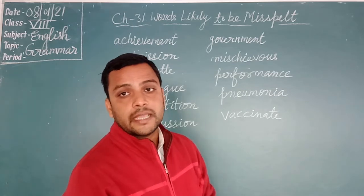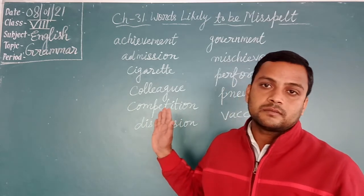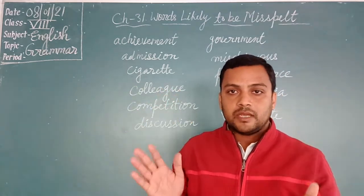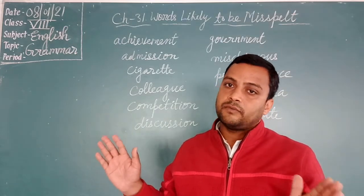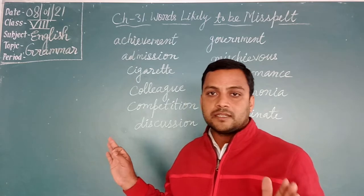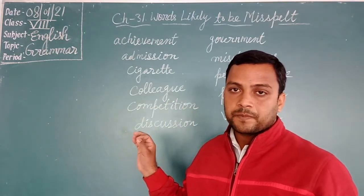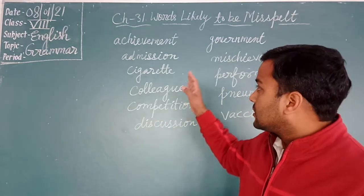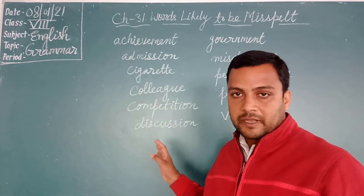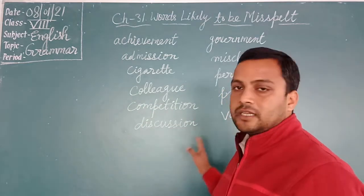So students, in your book a list of such kinds of words has been given. You have to read and learn all those spellings very carefully, so that when you have to write such kinds of words, you may not be confused. This chapter is complete — there is nothing else. Only you have to learn all the spellings. You will consult your book and learn all the spellings.